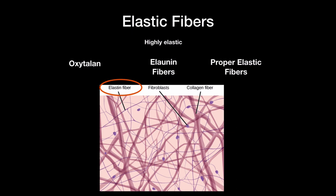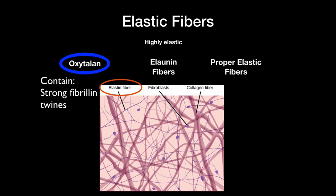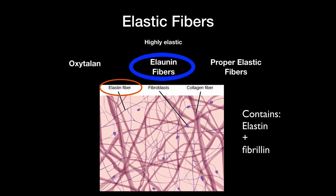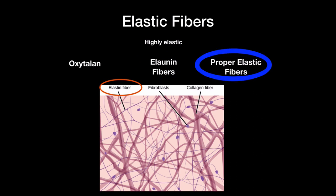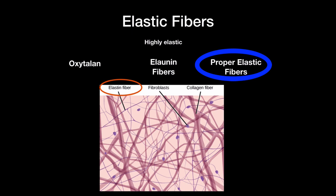Elastic fibers have three types. Oxytalan fibers are found in the eye and where the stratified squamous epithelium of the skin connects with the basal lamina. They are not elastic because they lack elastin, but they are highly resistant to pulling forces due to strong fibrillin. Elanin fibers consist of a mixture of elastin and fibrillin, found in ligaments of the teeth and dermis. Proper elastic fibers have a higher amount of elastin and are typically found in the aorta.